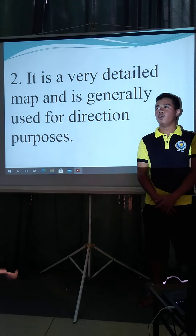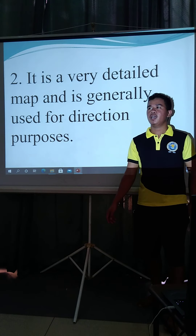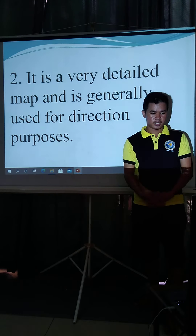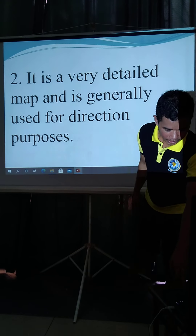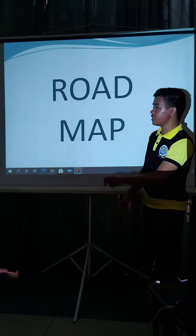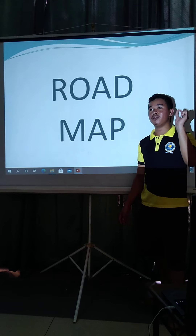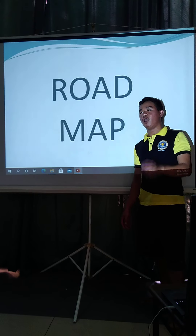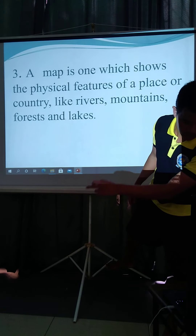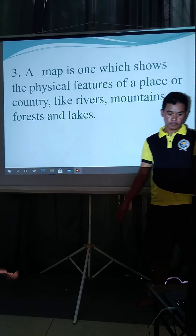For number two, direction purposes — what type of map would this be? Ms. Sanchez — very good. The answer is the road map, as it talks about directions and routes. Number three: a map which shows the physical features.